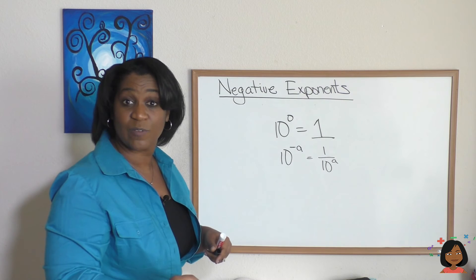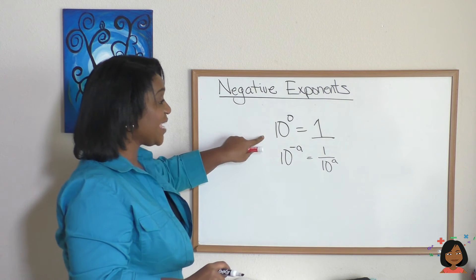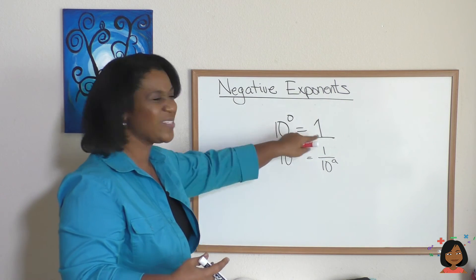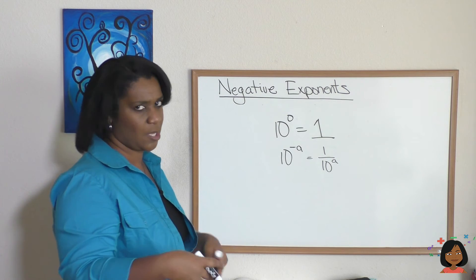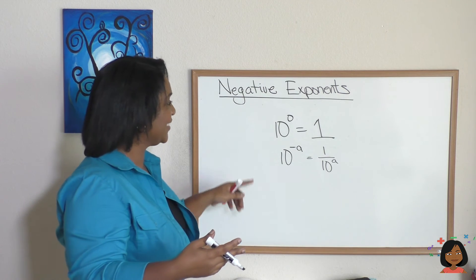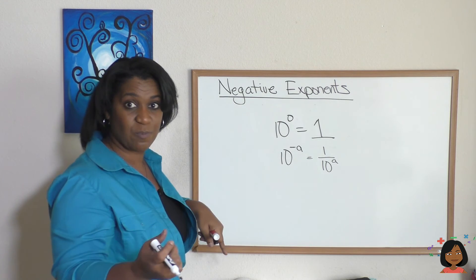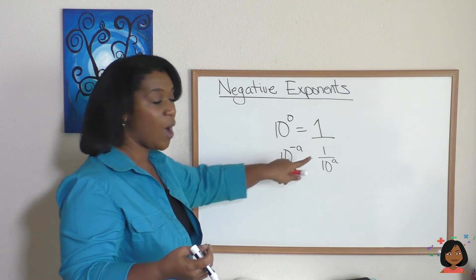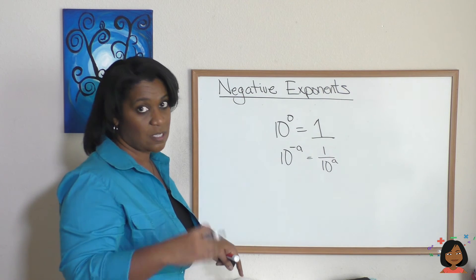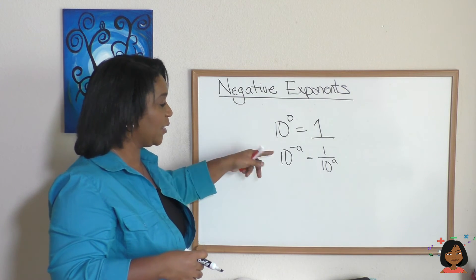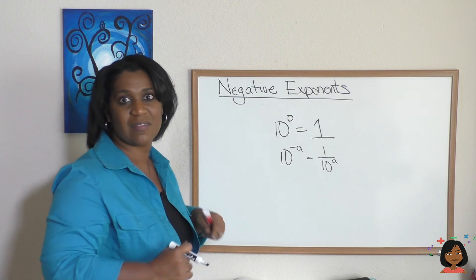Let's just summarize what we've learned thus far. 10 to the 0, or any number to the 0, is always going to equal 1. Just think, there aren't any 0s there, right? And 10 to the negative exponent is always going to be 1 over 10 to the positive of that exponent. You're just flipping it, and that negative becomes positive.